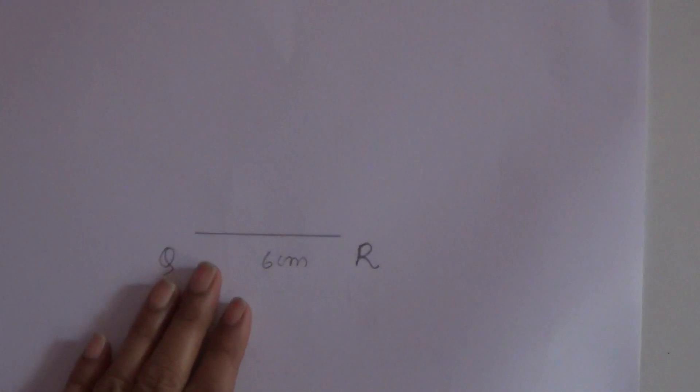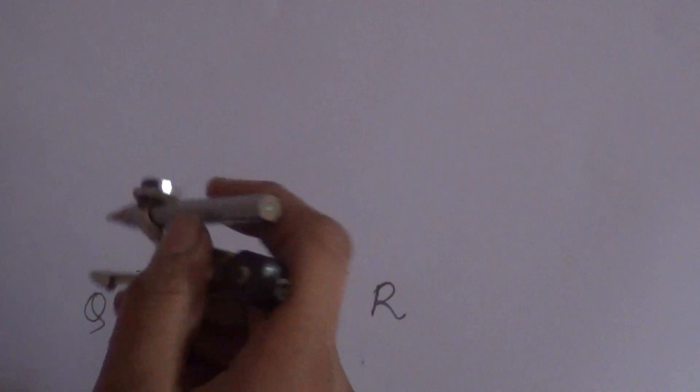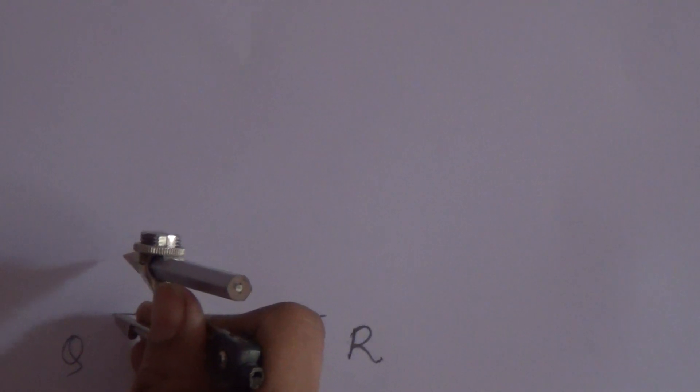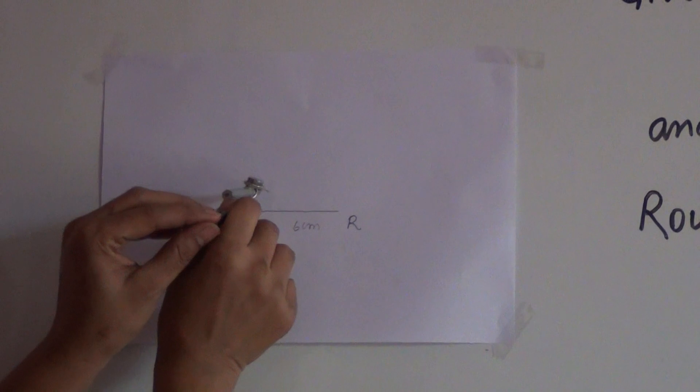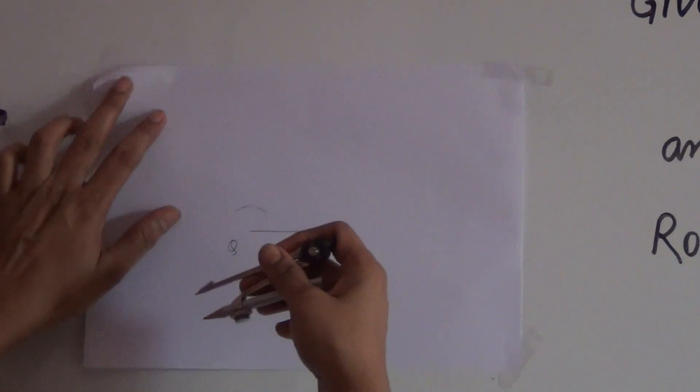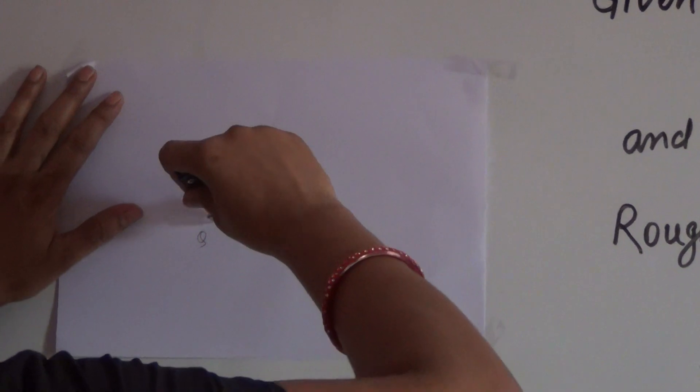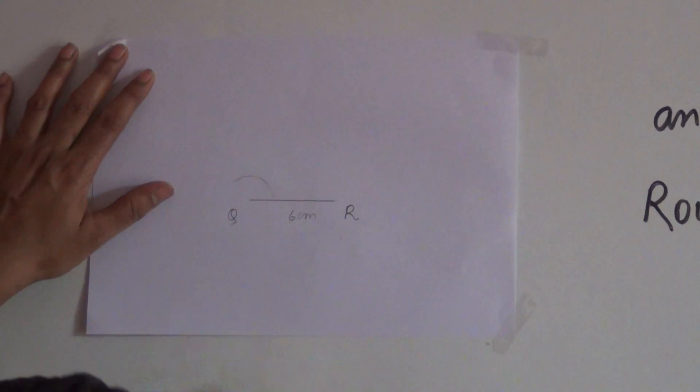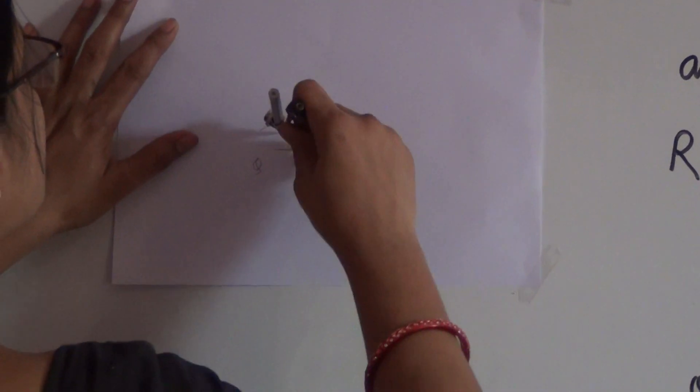Now, at Q we have to draw an angle of 60 degrees. Let us draw an angle of 60 degrees at Q. I hope it is quite visible to you clearly. Here is 60 degrees.